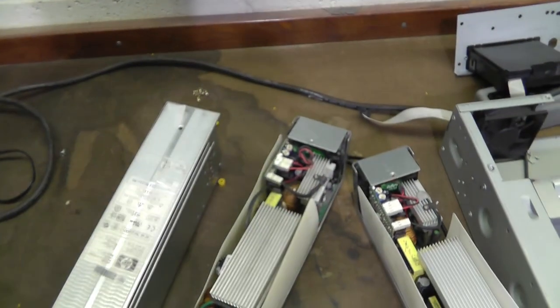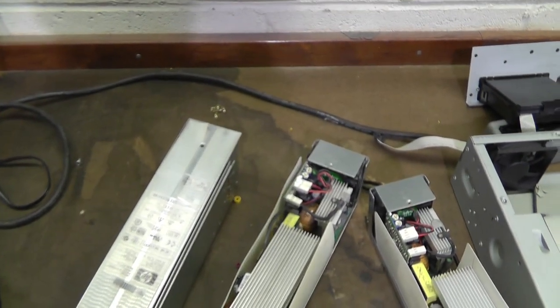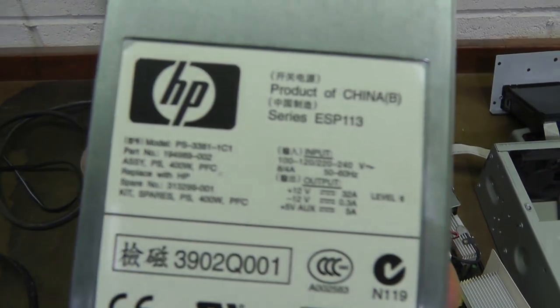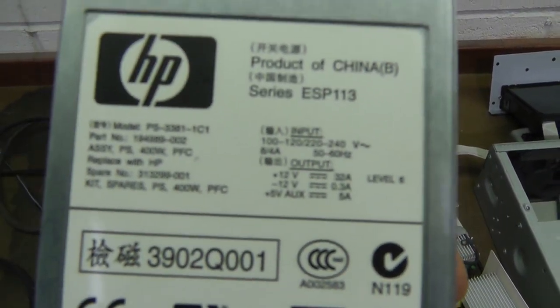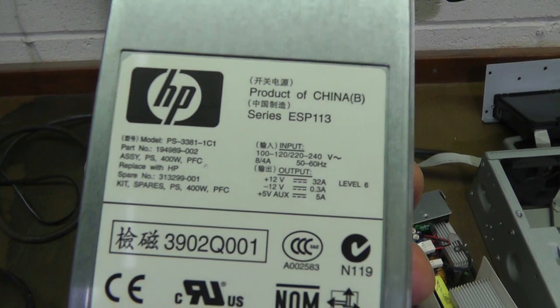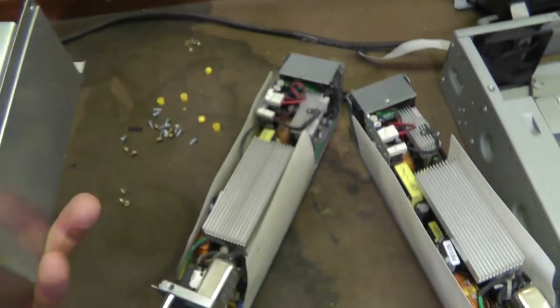All right. Let me try something. I'm going to switch the setting. Let's try that. Maybe that's better. 12 volts, 32 amps, 400 watt power supplies.